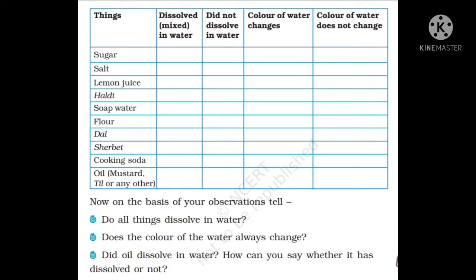Now we will move to the observation table on page number 111. In the first column, the things you added in water are written. Then you have to tick: which items dissolved in water, which did not dissolve, which changed the color of water, and which did not change the color of water.